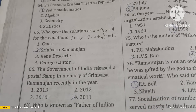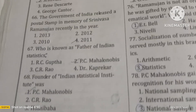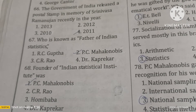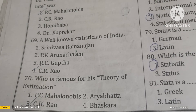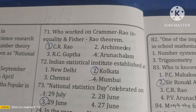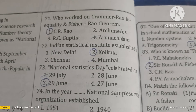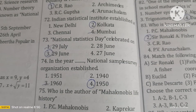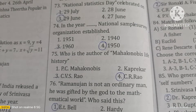The Government of India released a postal stamp in memory of Ramanujan in 2011. The father of Indian statistics is P.C. Mahalanobis, who was the founder of the Indian Statistical Institute. A well-known statistician of India is C.R. Rao, famous for his theory of estimation. C.R. Rao worked on the Cramér–Rao inequality and the Fisher–Rao theorem. The Indian Statistical Institute is established at Kolkata. National Statistics Day is celebrated on June 29th.